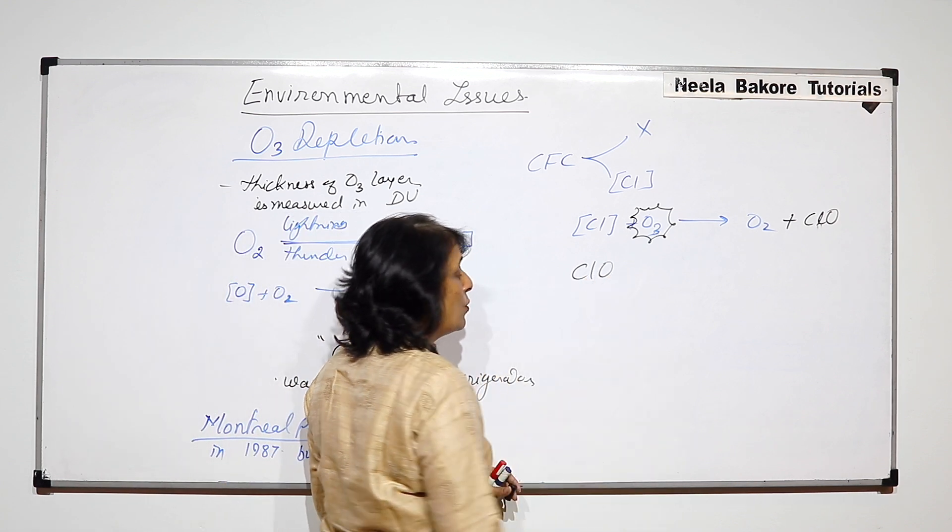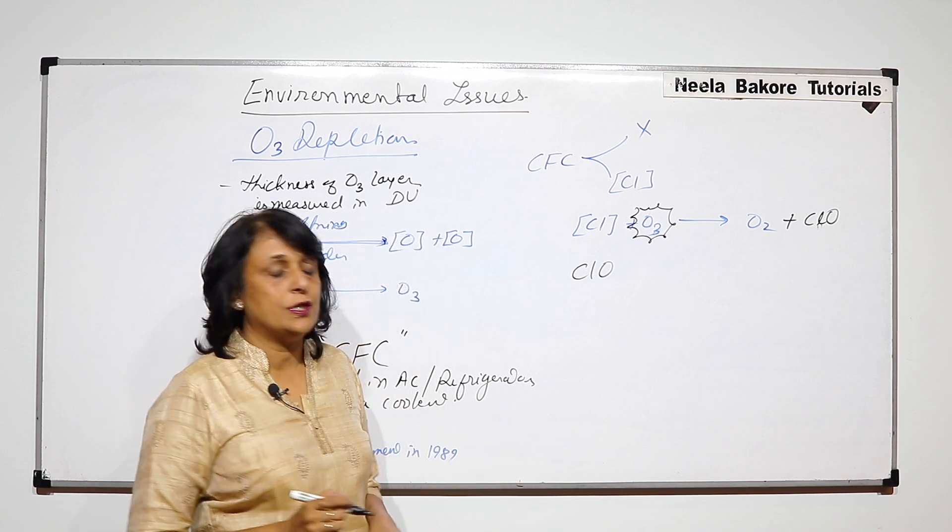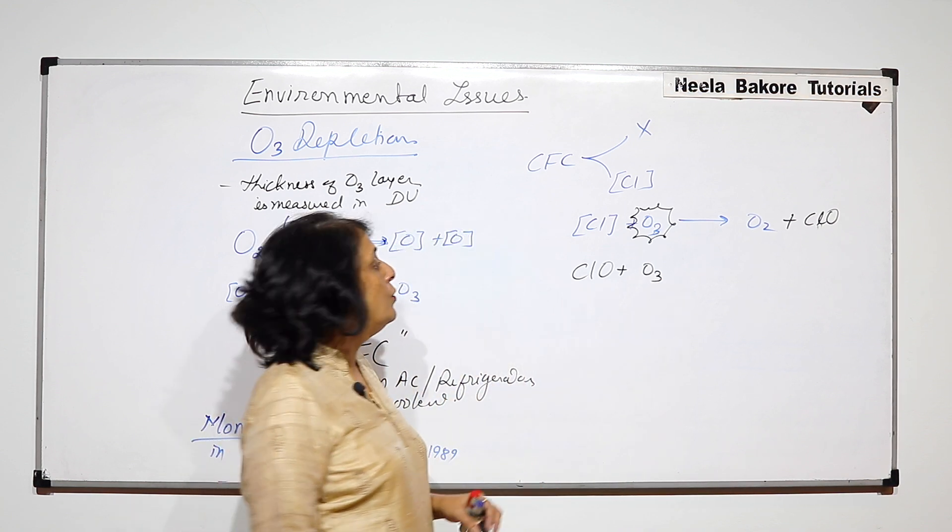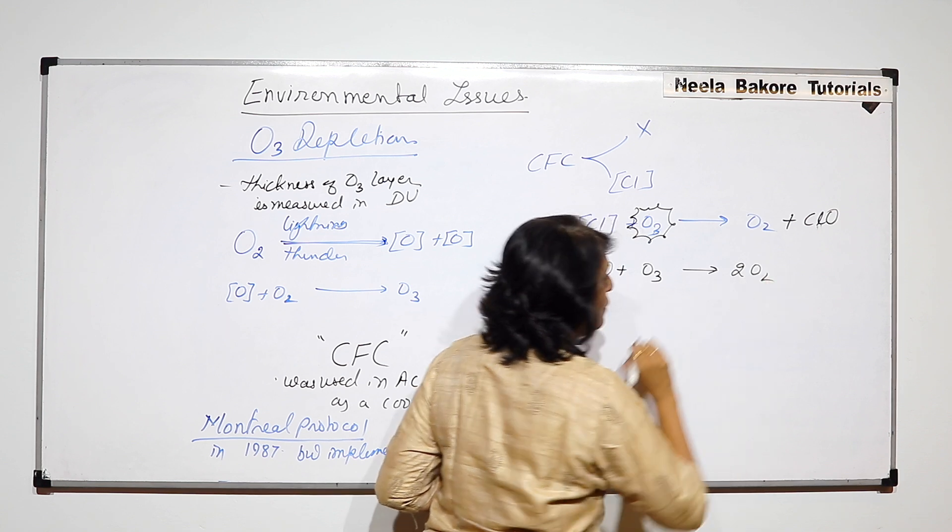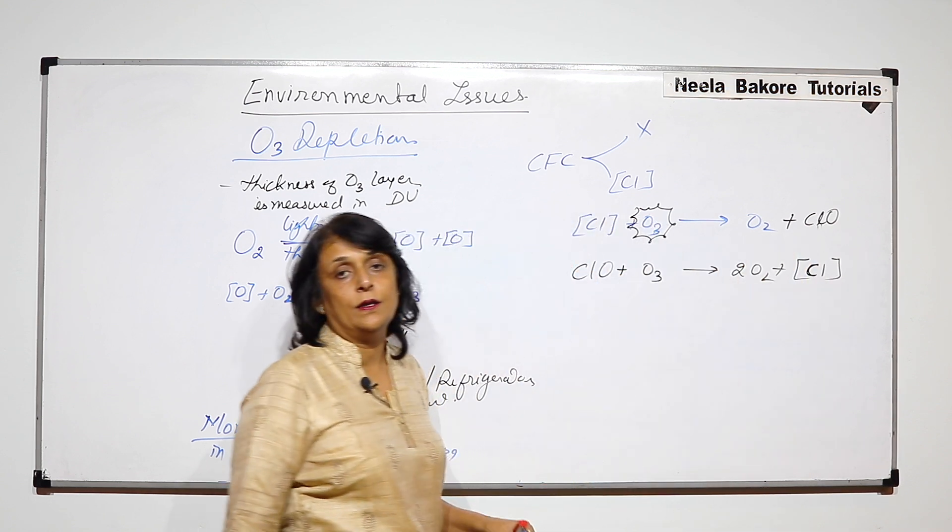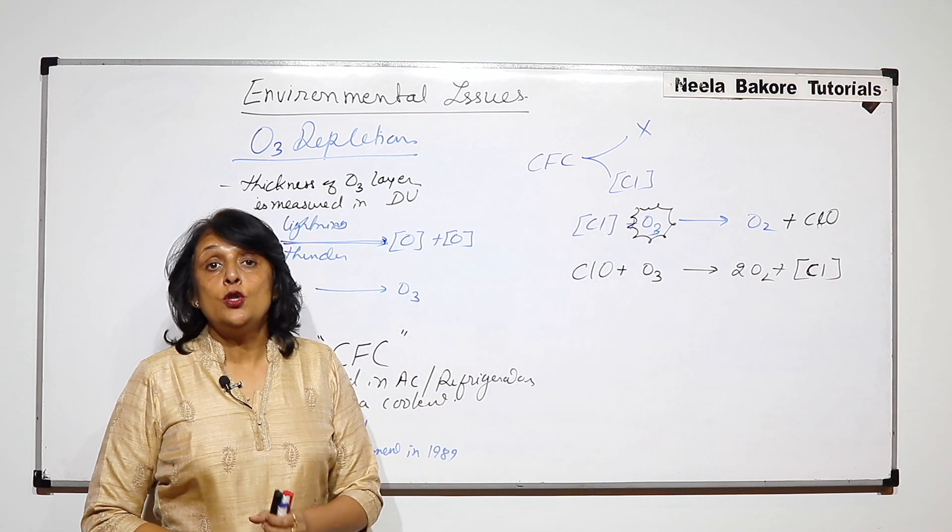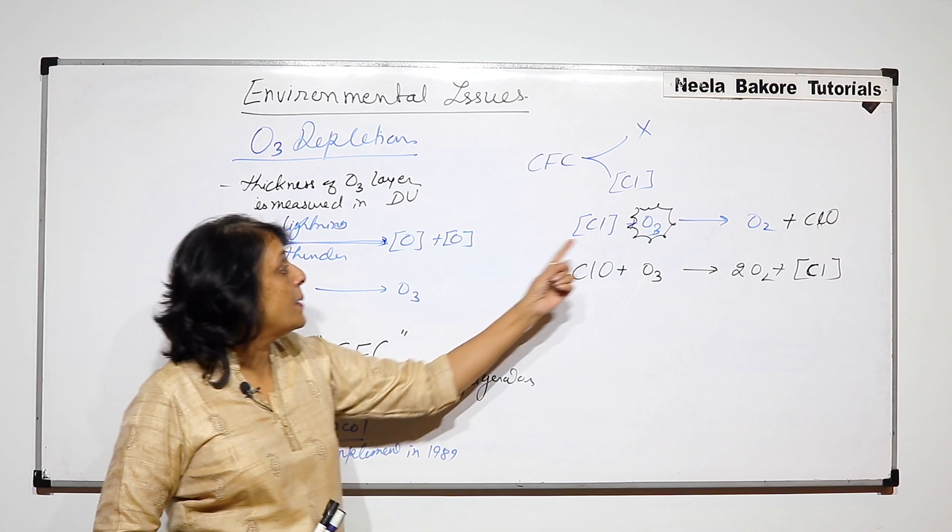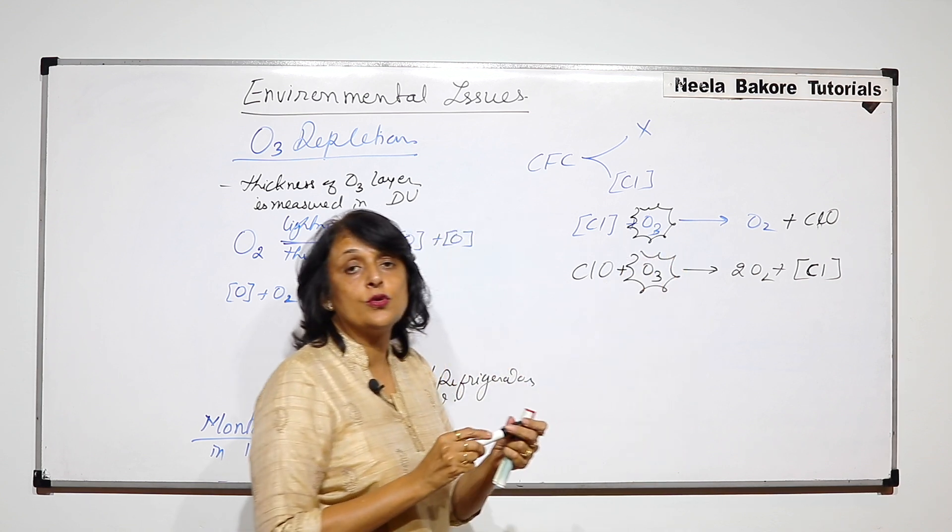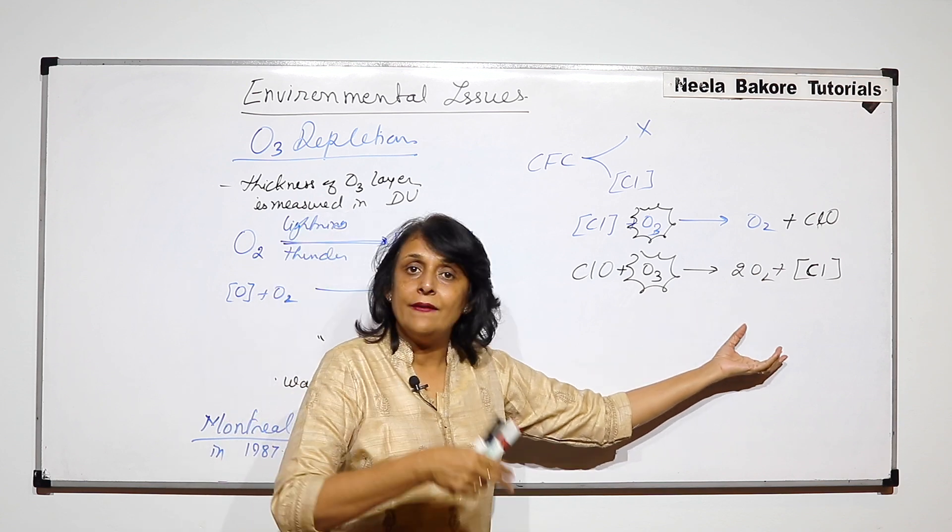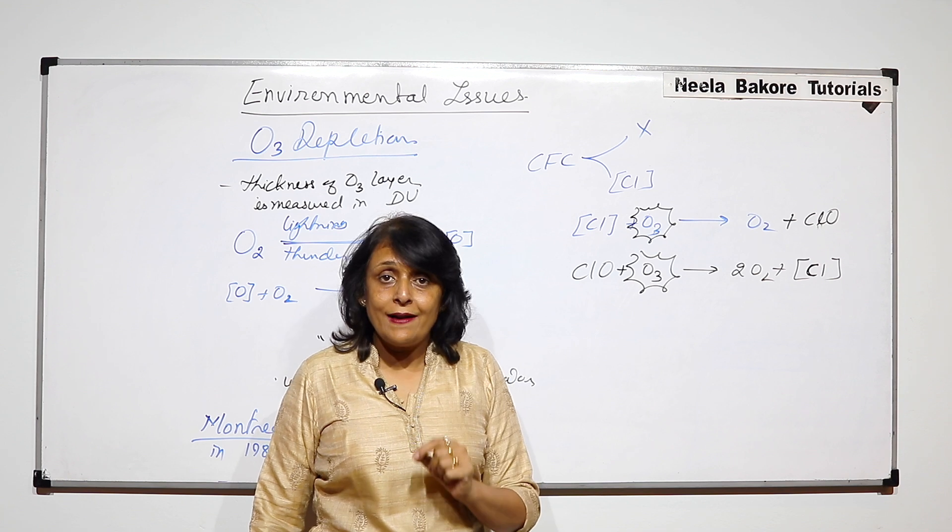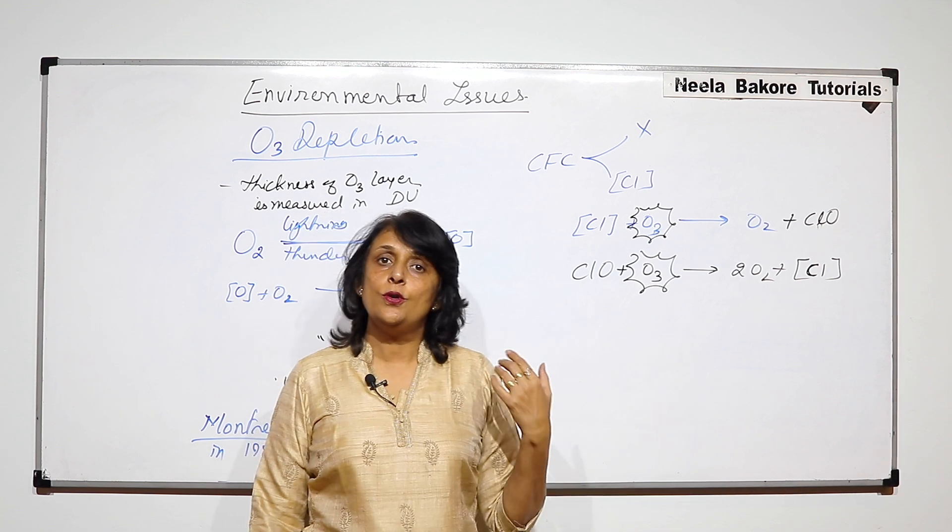Now, this ClO which is formed, chlorine oxide, is also very reactive and it reacts with one more ozone molecule to form two molecules of oxygen and this chlorine atom is again available. It is again set free. So one chlorine atom is capable of depleting or dissociating two ozone molecules and that chlorine is again there. So unless and until we remove that chlorine atom, depletion of ozone layer is going to continue.